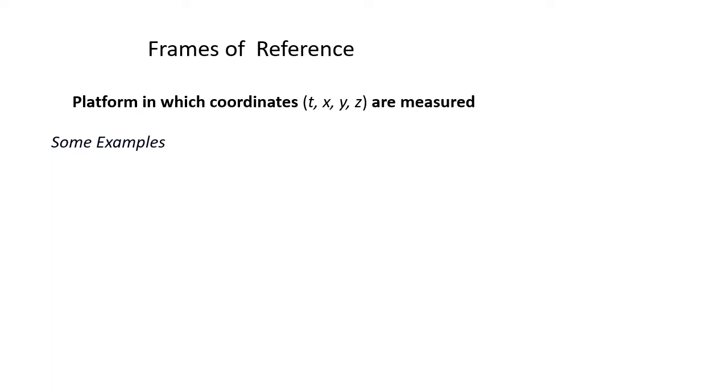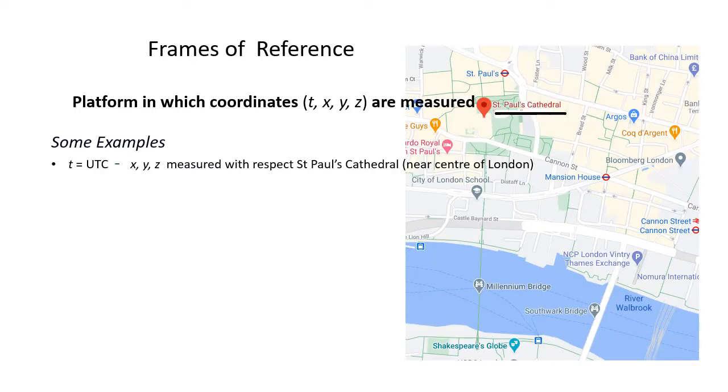A frame of reference is a platform in which our t, x, y and z coordinates are measured. If we wanted to measure where an event in London was, we might say t equals UTC, and x, y, z might be measured with respect to the centre of St Paul's Cathedral.